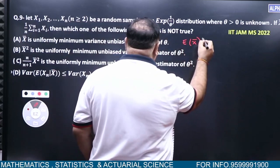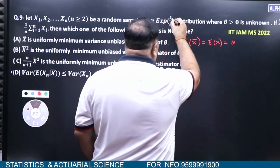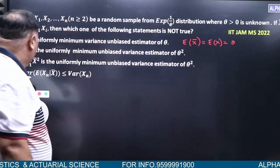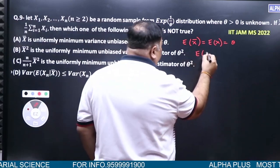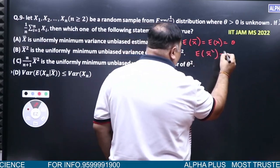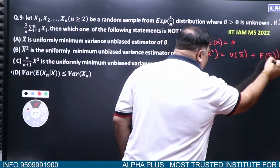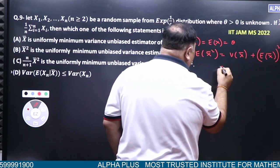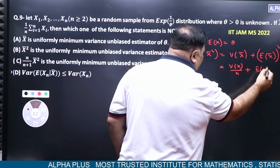Expectation of X bar is same as expectation of X, which is equal to theta. Parameter 1 by theta. So, X bar square is talking about this. Expectation of X bar square is variance of X bar plus expectation of X bar squared. Variance of X bar is variance of X by n plus expectation of X.